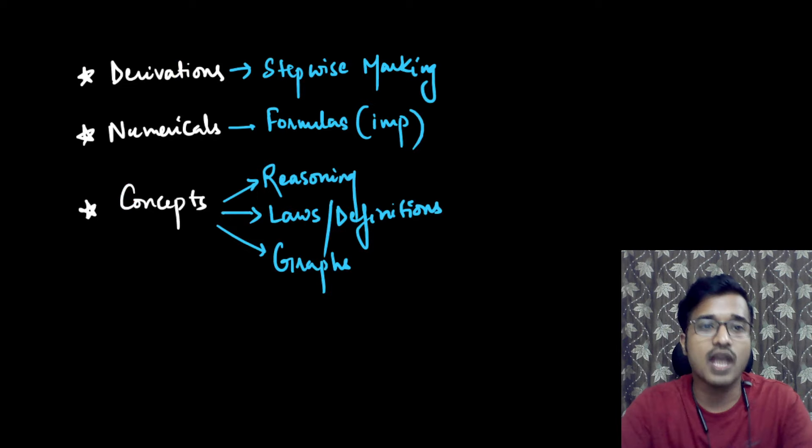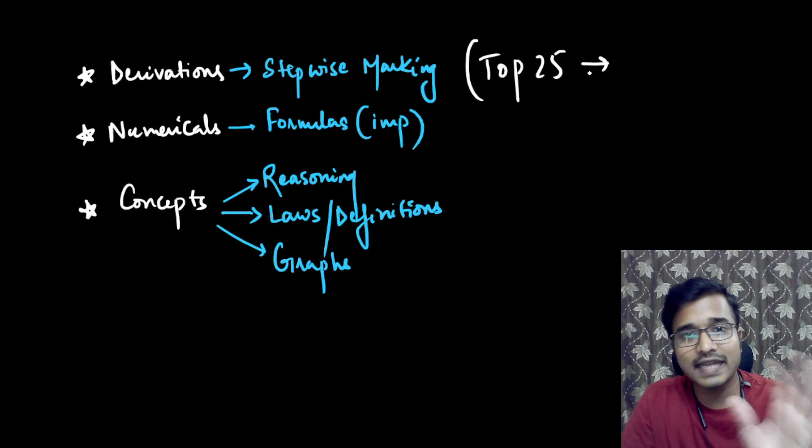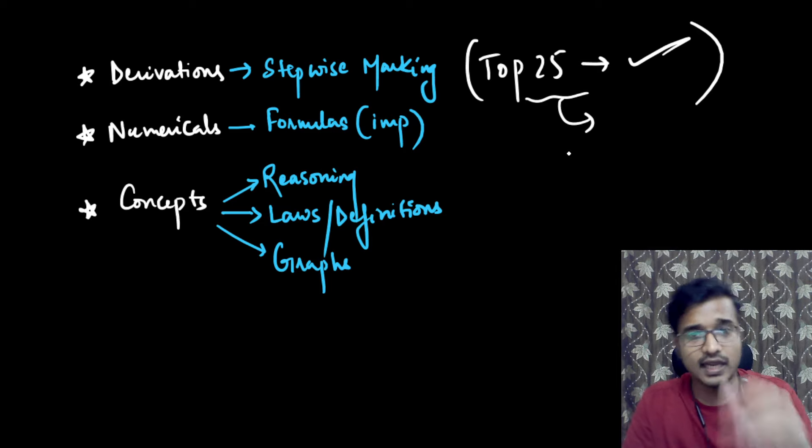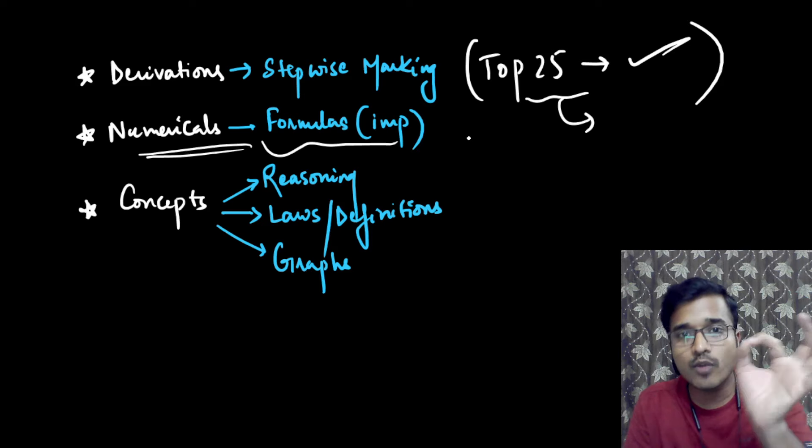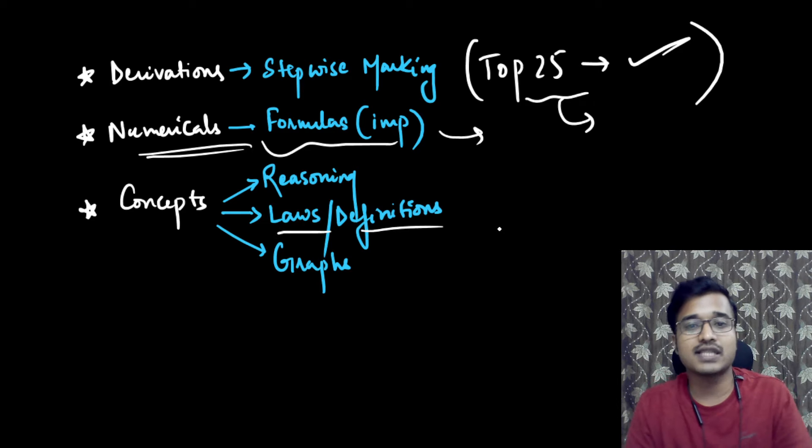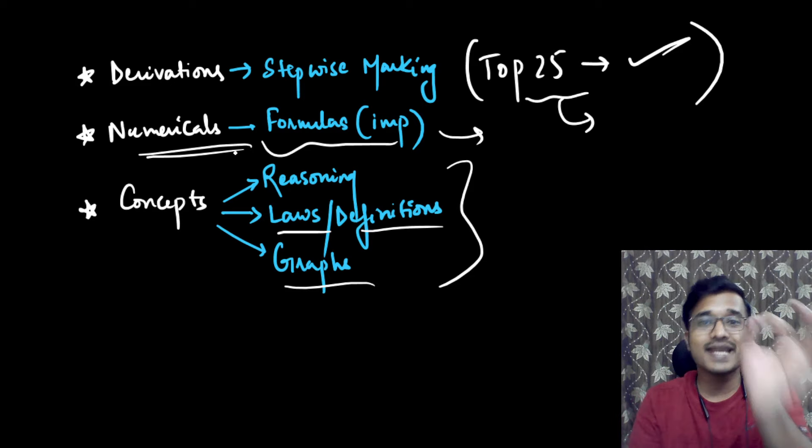In the paper there are some things that you have to keep in mind, that the derivation will be step-wise marked. So you should see the top 25 derivations, formulas are very important. So one, the formula is all in the chapter formulas will be given. In other concepts, you can get conceptual questions, or laws, definitions can be asked and you can see graphs. So we have also uploaded a video to check them.